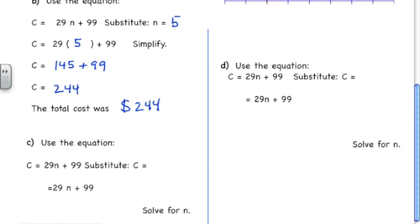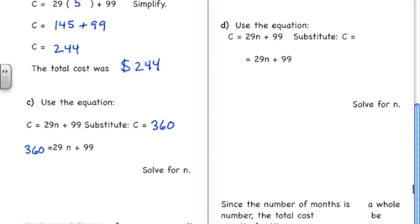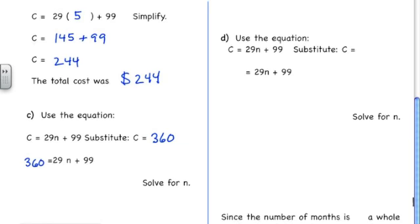So we go to our equation, and this time we're going to substitute, and we know the cost is $360. So I'm going to replace C in the equation with 360, and now I'm going to have to isolate N in order to solve this equation to find the number of months he used the gym.